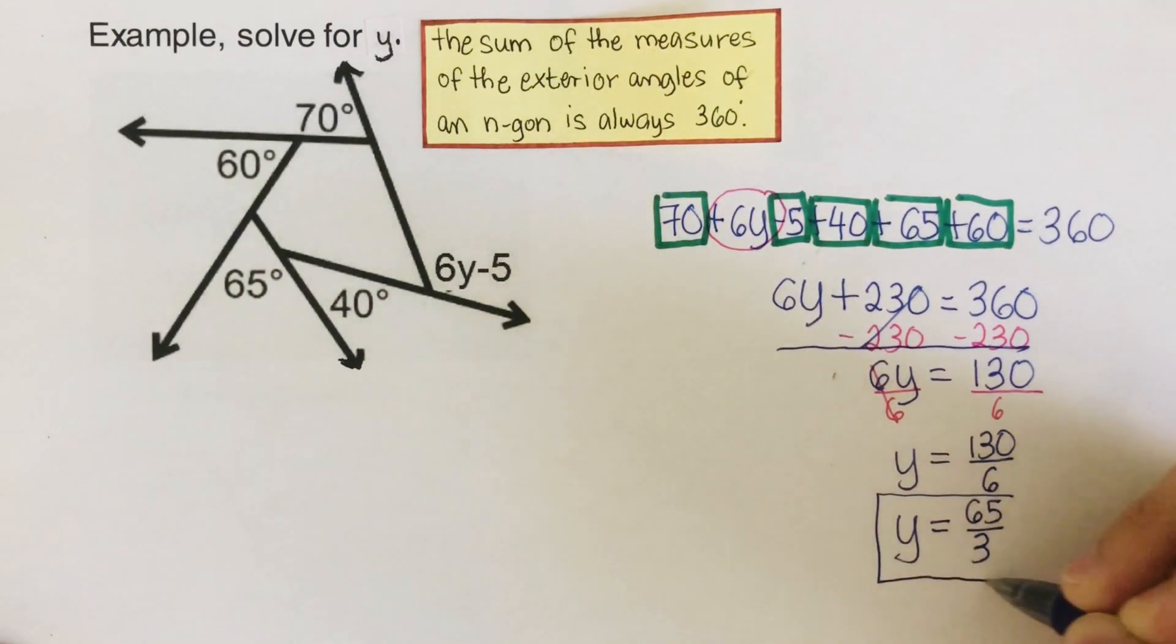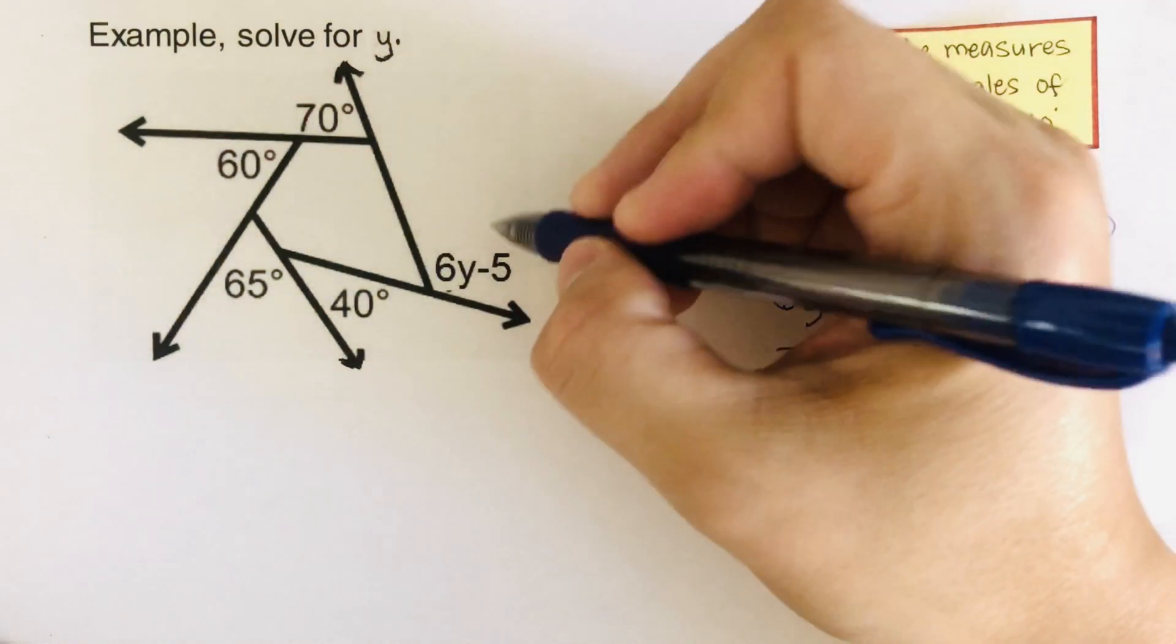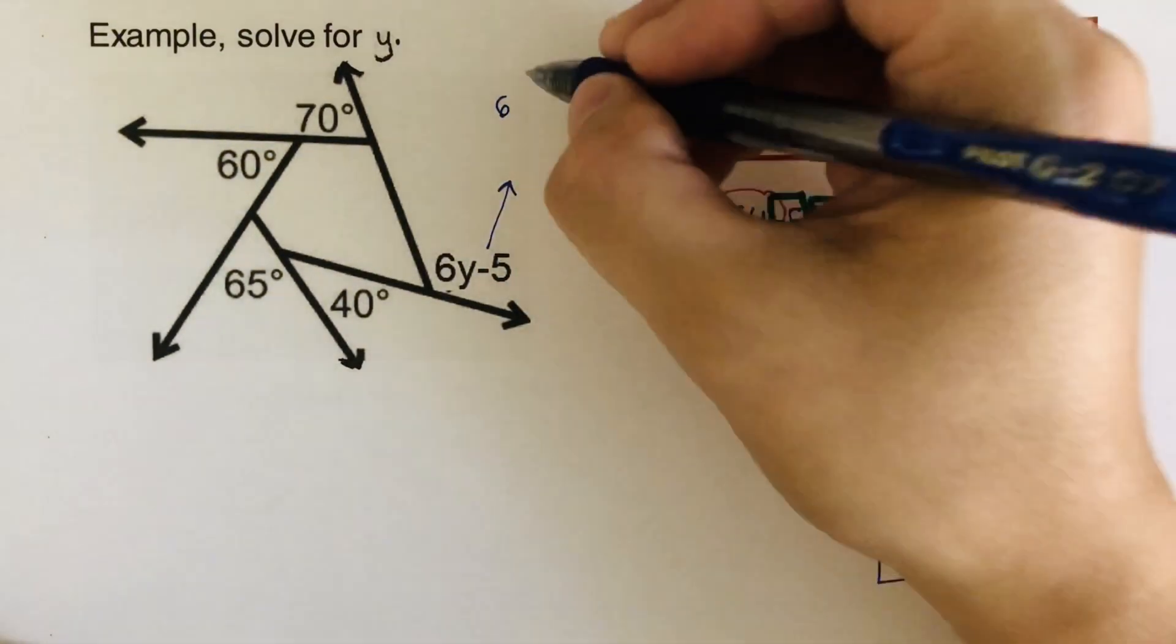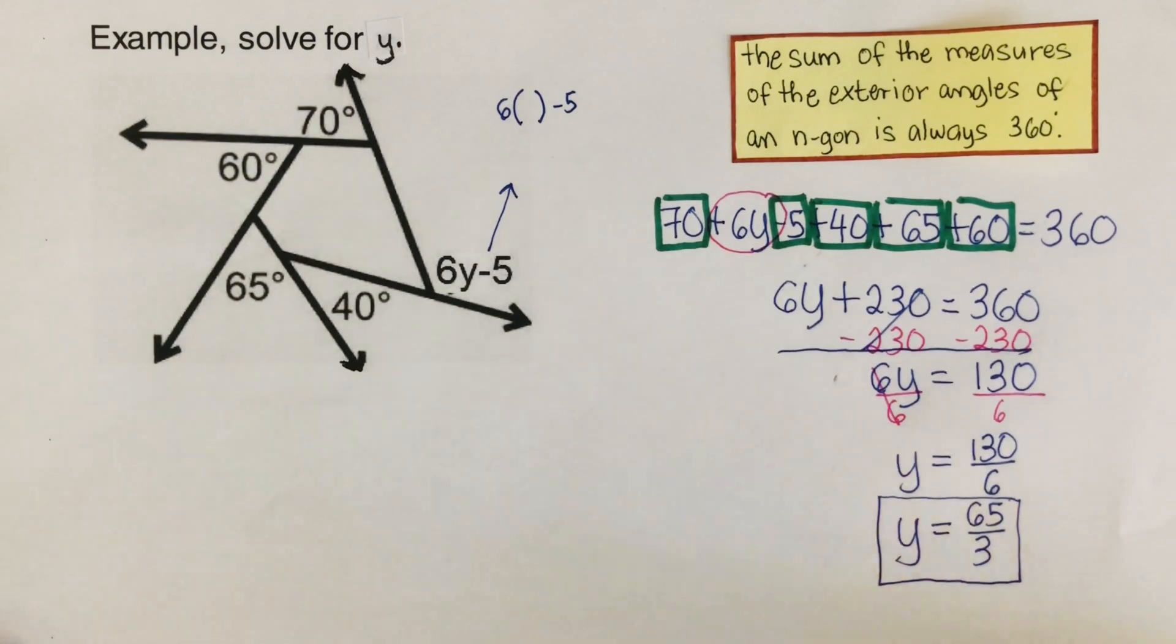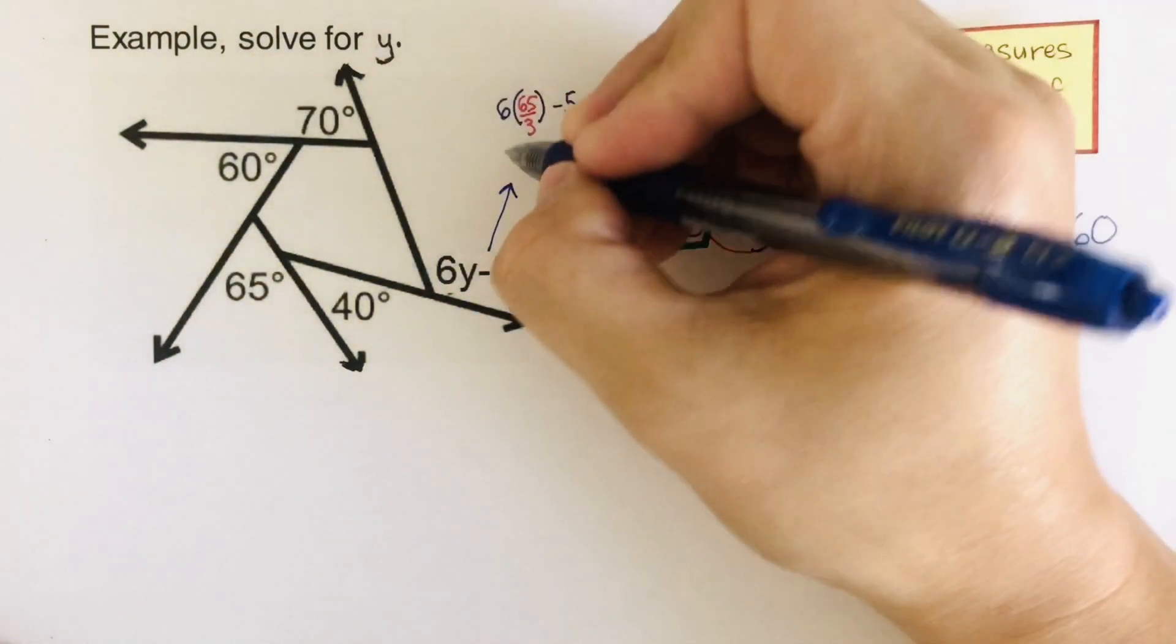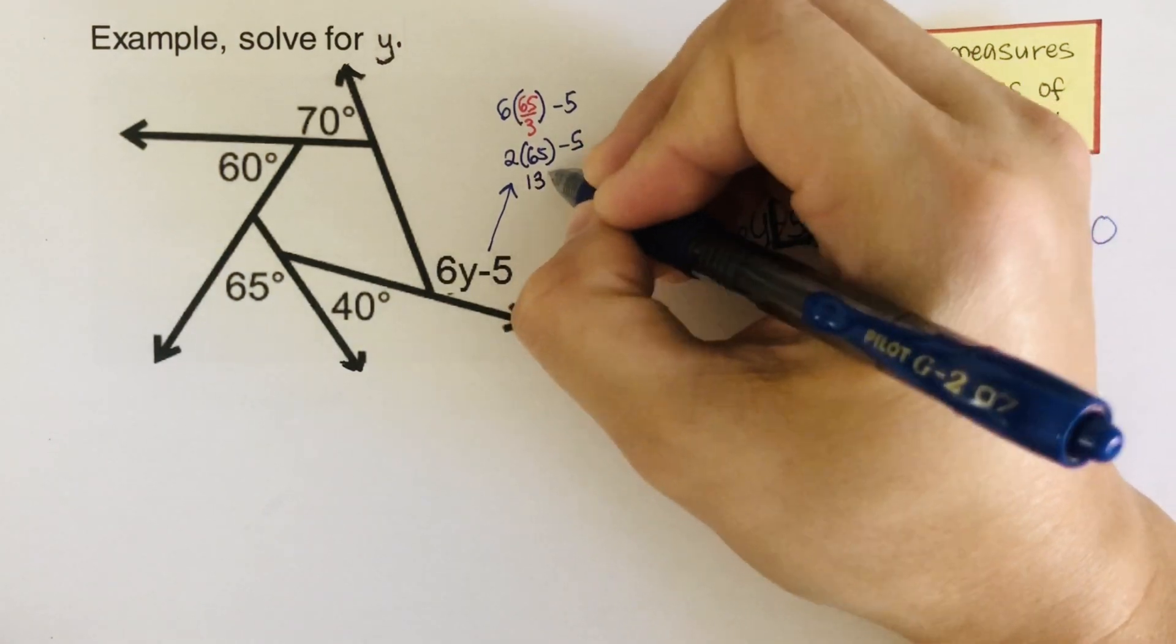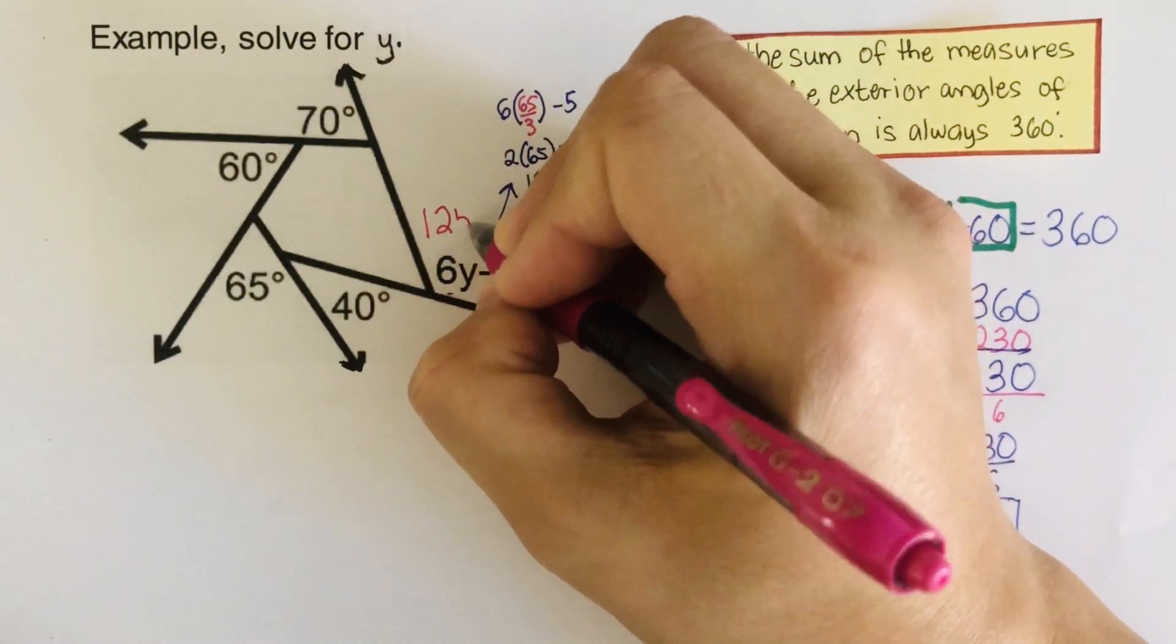So this is our value for y: 65 over 3. This makes sense if we check our work. If we plug this value into this expression, the only one with a variable: 6 times 65 over 3 minus 5. So 6 divided by 3 is 2 times 65 minus 5, which is 130 minus 5, equals 125. So this side right here is 125 degrees.